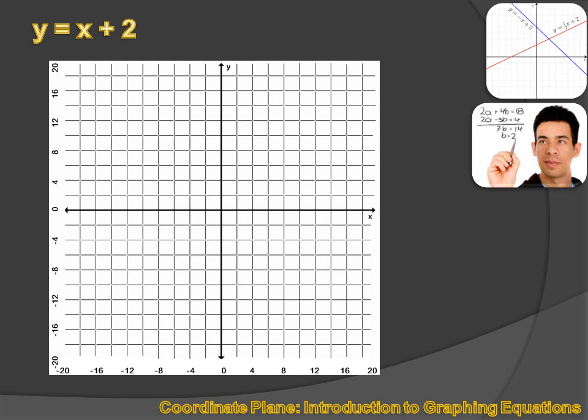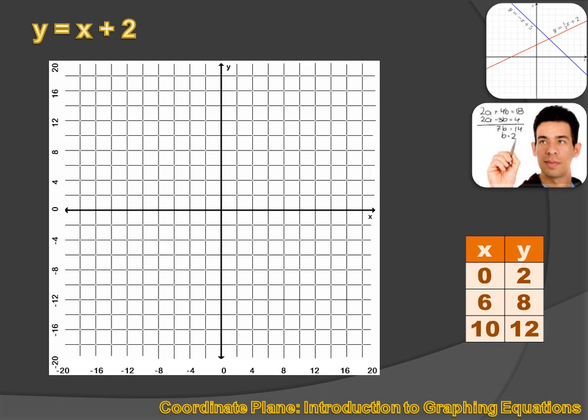And we could plot an equation on this coordinate plane. We've done this before in earlier lessons. We could create a table of x values, or input values, and y values, or output values. We could plot those points on the coordinate plane. And then we could draw a line. And that line represented all the combination of x and y values that satisfy the equation y equals x plus 2.